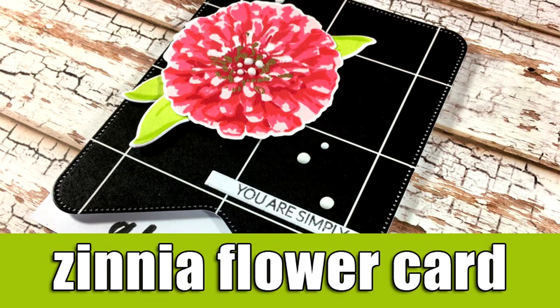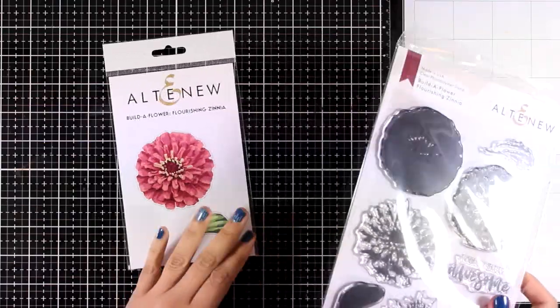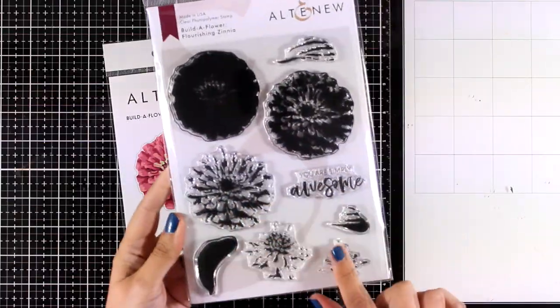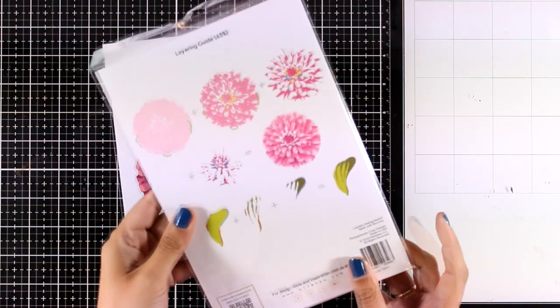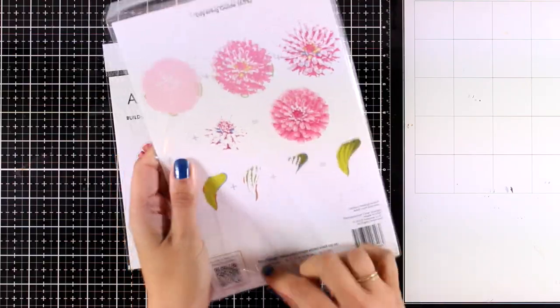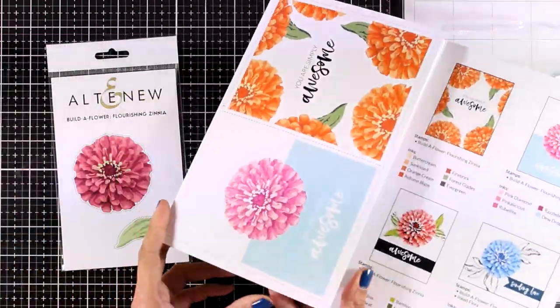Hi and welcome back, it's Vicky here with a flower card today. I will be using a new stamp set that has just been released by Altenew. This is the Flourishing Zinnia, a layering flower stamp set, one of my favorites that Altenew always comes up with.